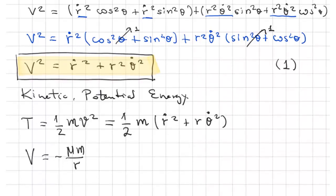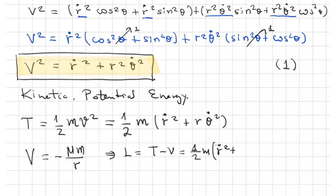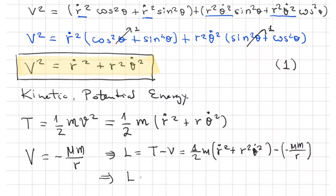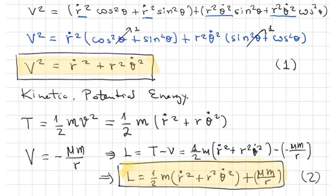The Lagrangian of the problem, given the potential and kinetic energy, is L = T minus V. That equals one half of the mass times (ṙ² + r²·θ̇²) minus (−mu·m divided by r), which we can rearrange. Let's call this equation number two.